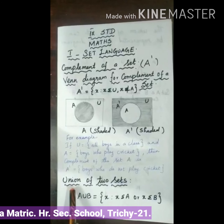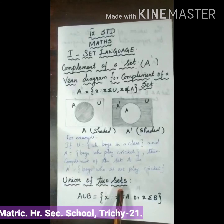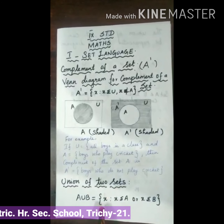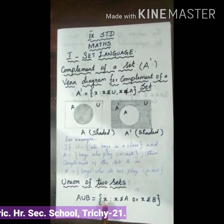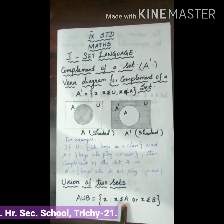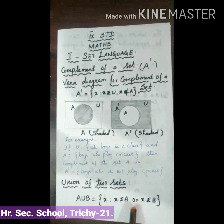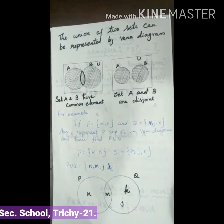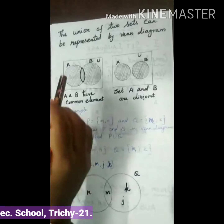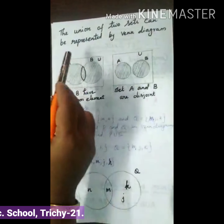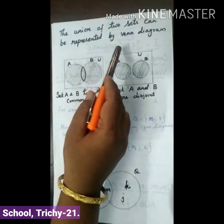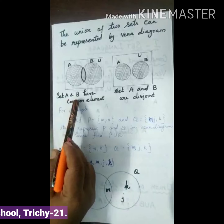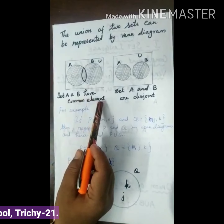Now let us see union of two sets. A union B is equal to the set of X such that X belongs to A or X belongs to B. The union of two sets can be represented by a Venn Diagram. Set A and B have a common element.